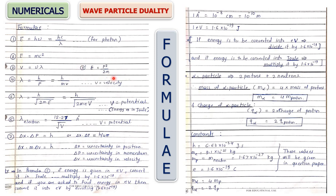The next set covers expressions for de Broglie wavelength — these formulas are very important. First, λ = h/p, which means λ = h/mv. Then λ in terms of energy: λ = h / √(2mE). In terms of potential, for any charged particle: λ = h / √(2meV).